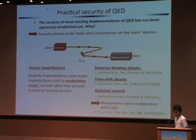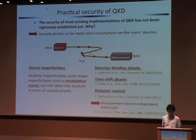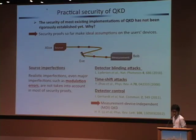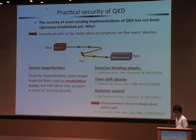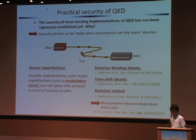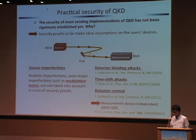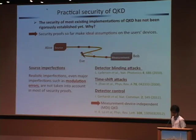On the other hand, if you look at the source device on Alice's side, there exist many side-channel attacks and potential imperfections. However, almost all the security proofs so far do not take into account typical or major imperfections like the modulation errors at Alice's source side. In that sense, the security proof with practical resources is not satisfactory. This talk is mainly focused on the practical security proof accommodating the imperfections at Alice's side, especially for the modulation errors.